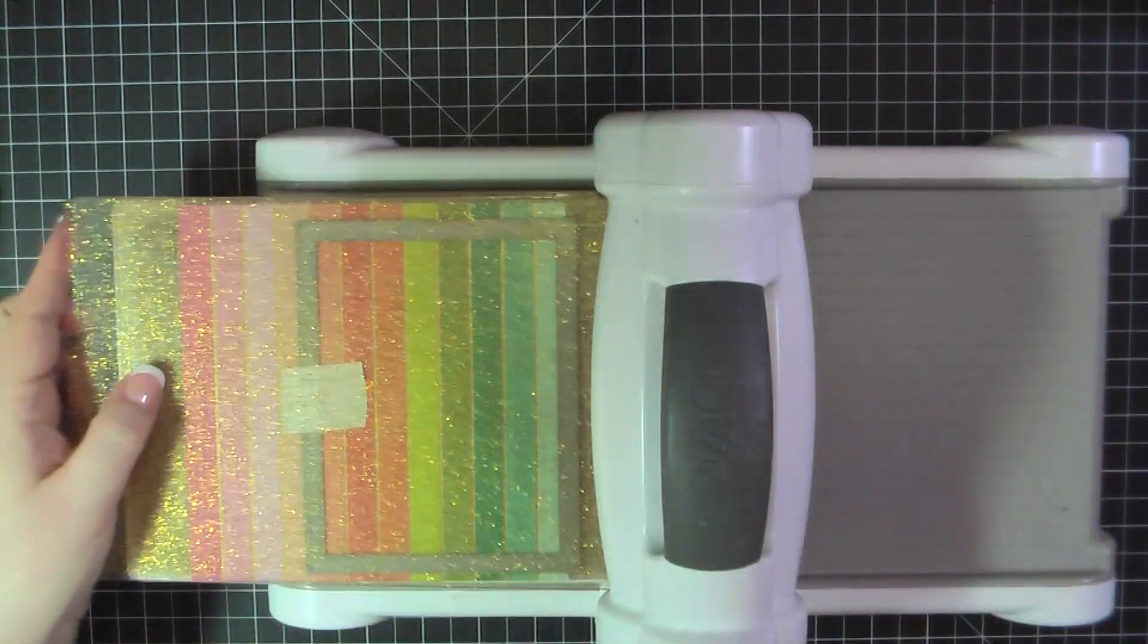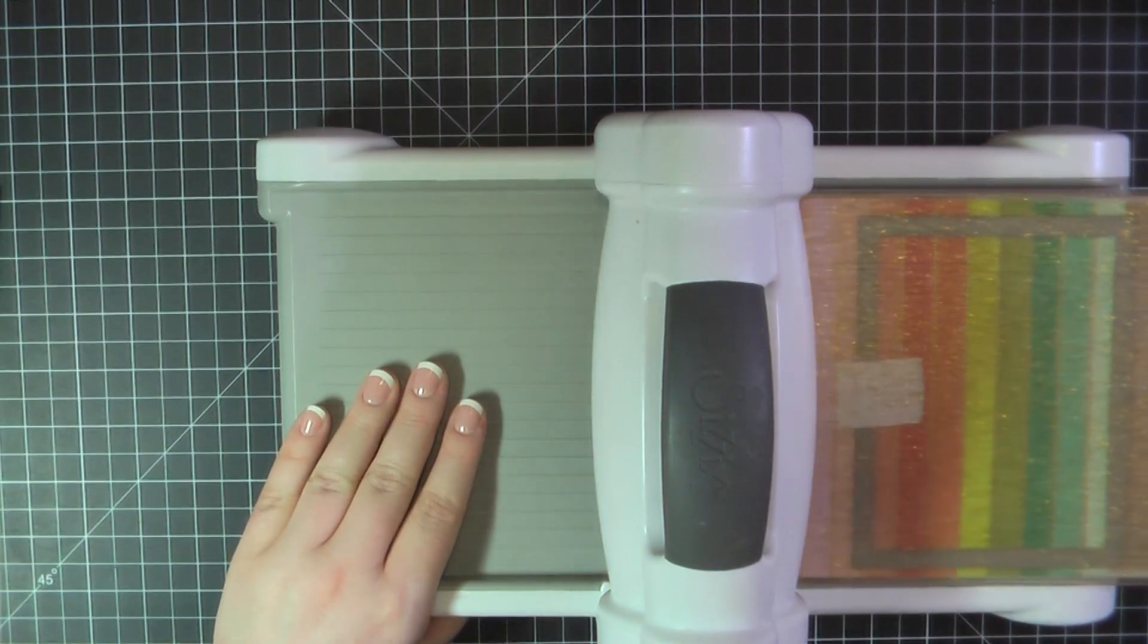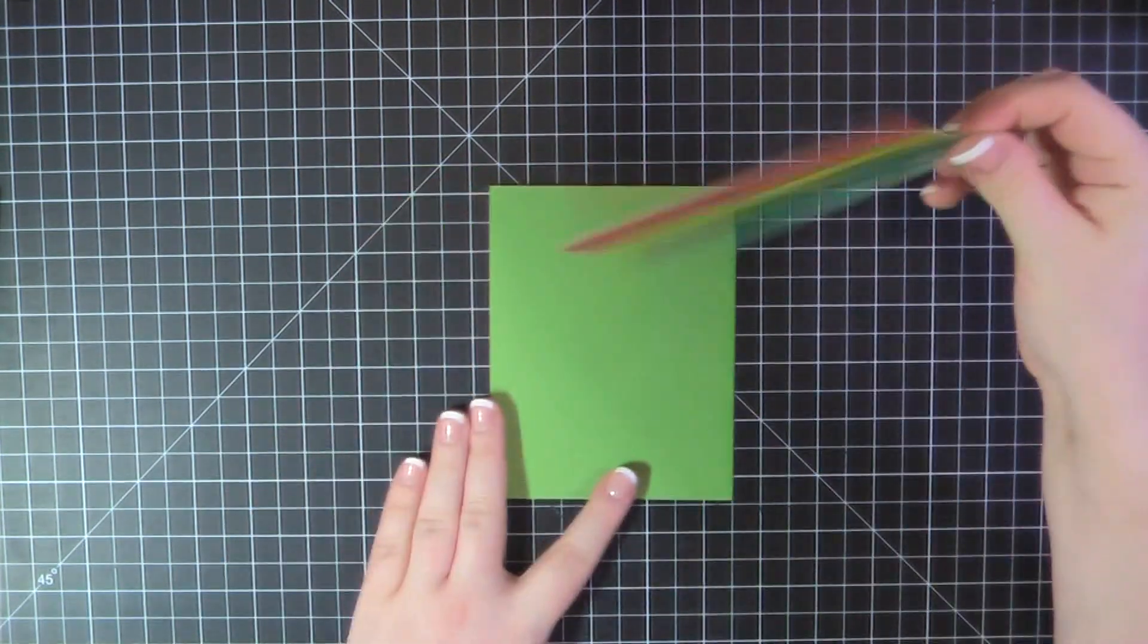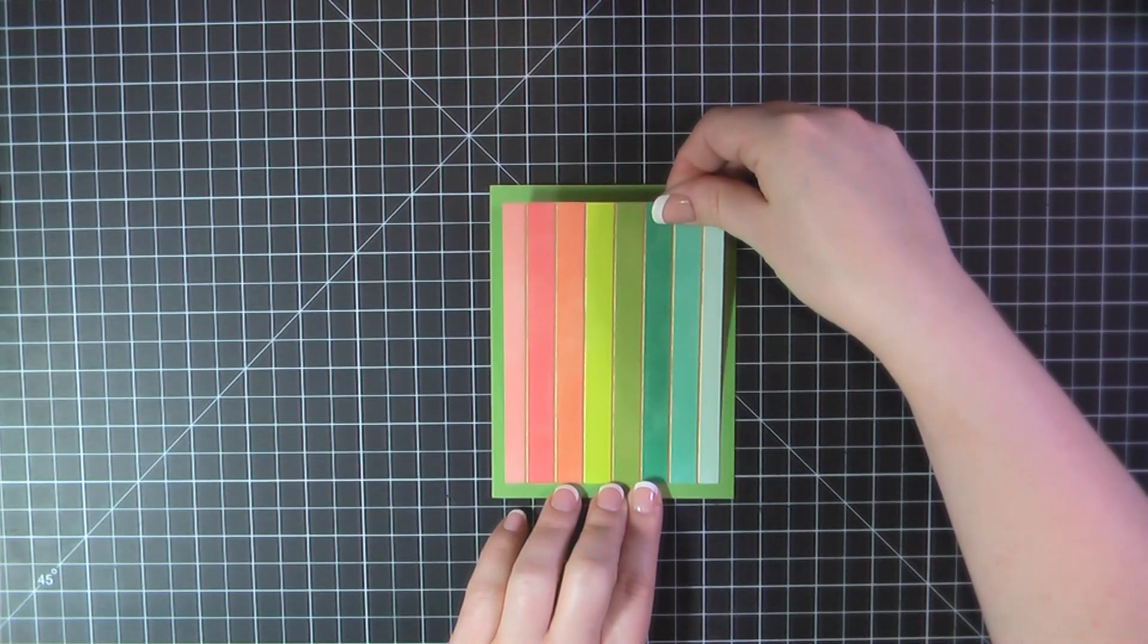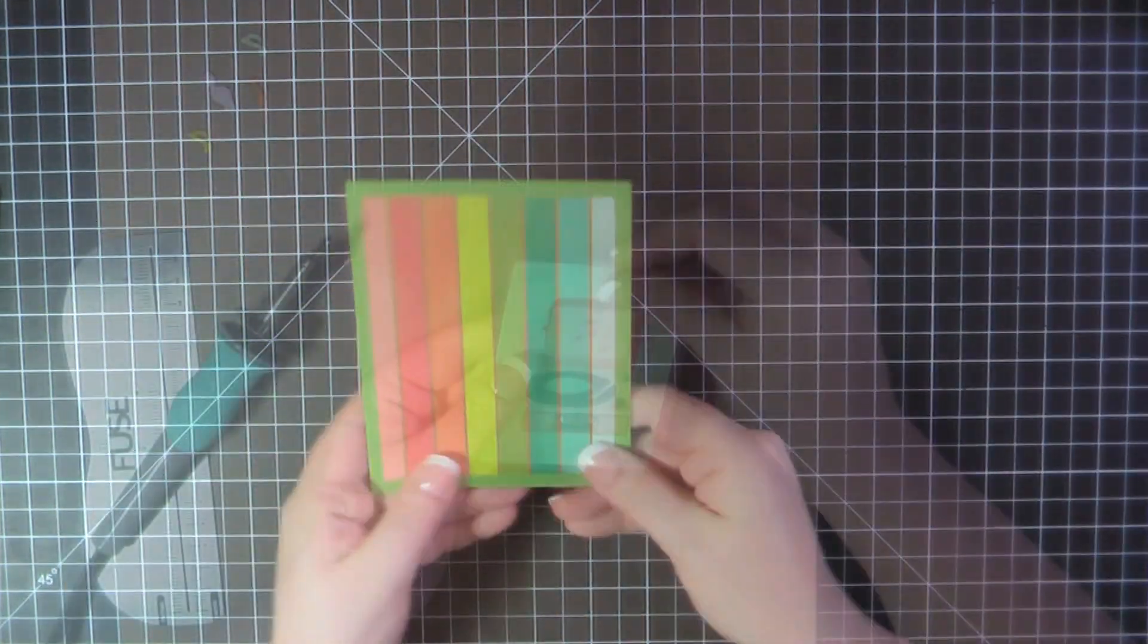So here for card number two, I'm again using that Blueprints 32 frame die to trim out a panel from this gorgeous rainbow paper. I just loved the colors in this collection. I'm going to add some ATG to the back of that, and I'll place that on top of my card base. And this card base is made from MFT's Gumdrop Green.